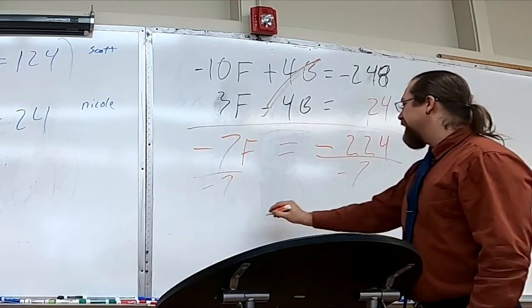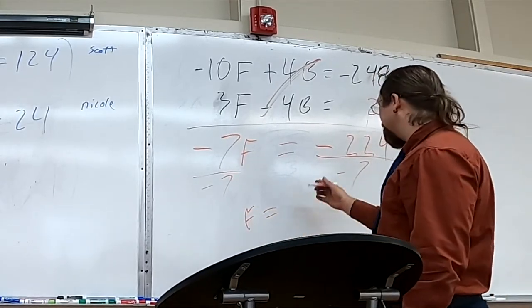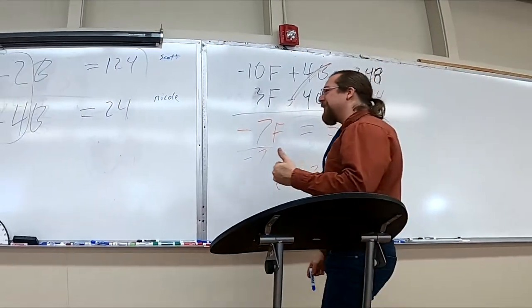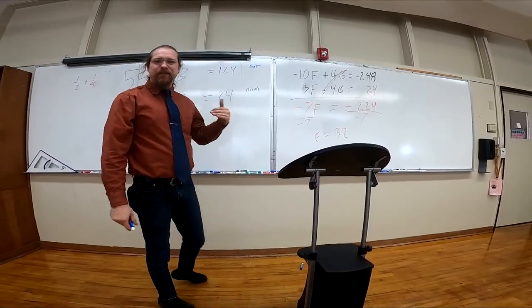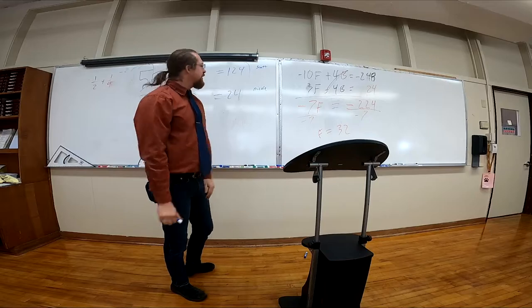So here, we divide by negative 7, and F is equal to 32. You buy football for $32. You see the diminishing returns here, right? I make more mistakes the more push-ups I do, so I end up doing more push-ups.